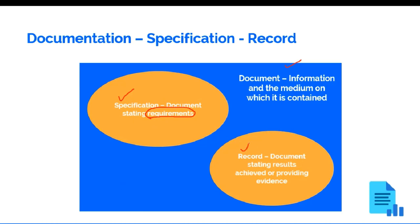A record is a document stating the results achieved or providing evidence. This is very important. We will always refer to different types of records. A document stating results achieved or providing evidence is a record. For example, a meeting scheduled on the 12th of February at 1:30 p.m. — the meeting calendar is a record, and it is a type of document.